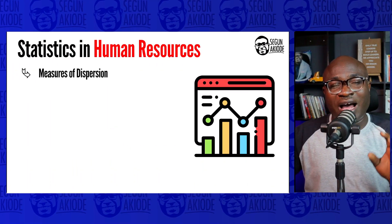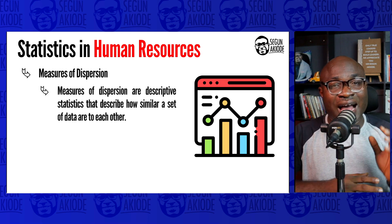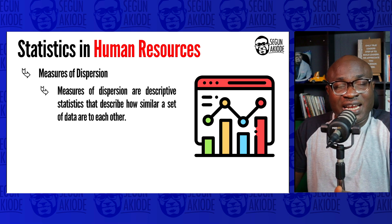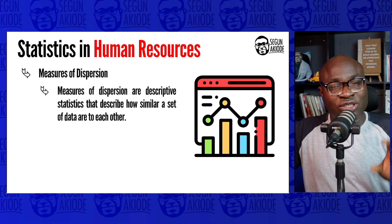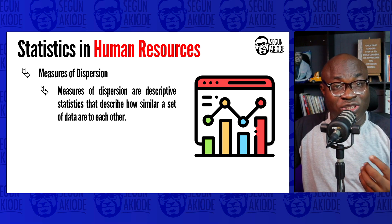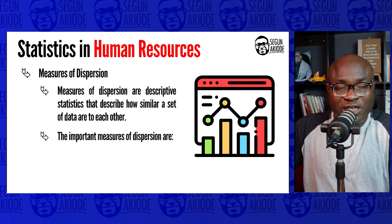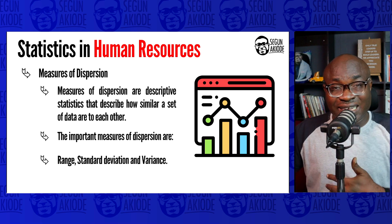Aside from measures of central tendency, we also have measures of dispersion. Measures of dispersion are descriptive statistics that describe how similar a set of data are to each other. The important measures of dispersion are your range, your standard deviation, and your variance. Range helps you understand the spread of the data set by finding the difference between the minimum and maximum values. Standard deviation helps you understand how far apart individual data points are from the mean, and variance is the square of your standard deviation.